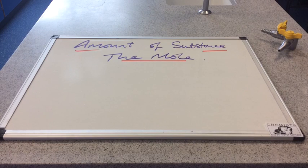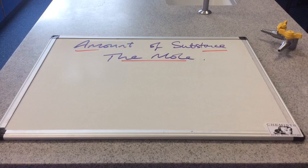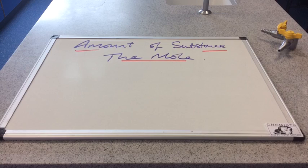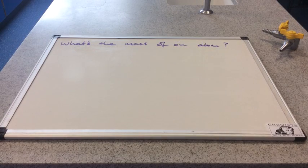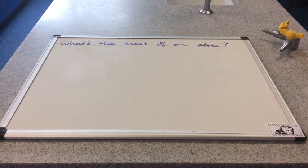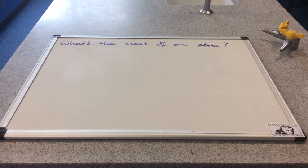In this video I'm going to look at how chemists deal with the minute size of atoms when they measure amounts of substance. So hopefully by the end you'll understand the concept of the mole. We'll start off by looking at the mass of a typical atom and hopefully you'll appreciate that these numbers are so tiny that we have to scale up to something more manageable.